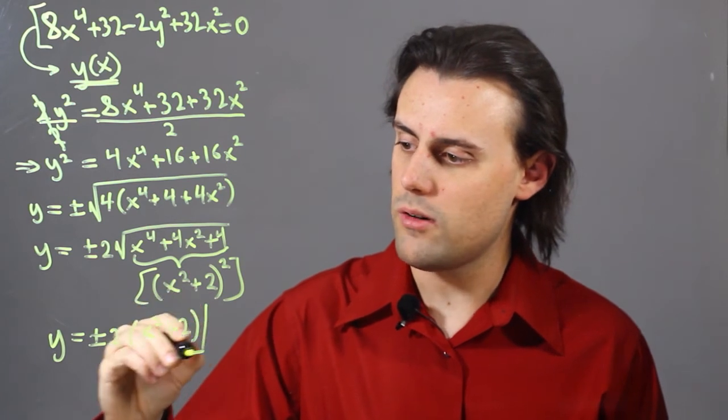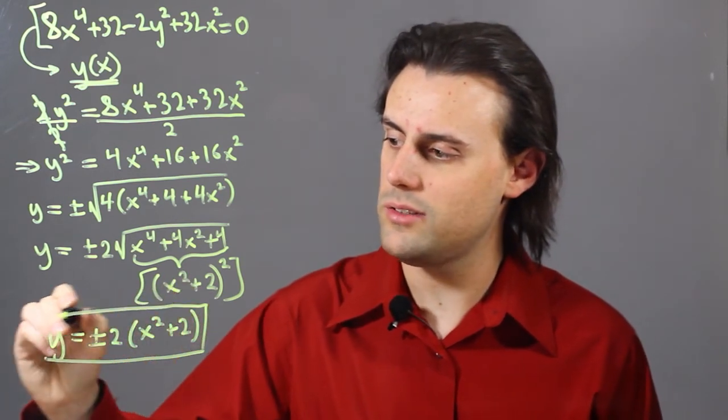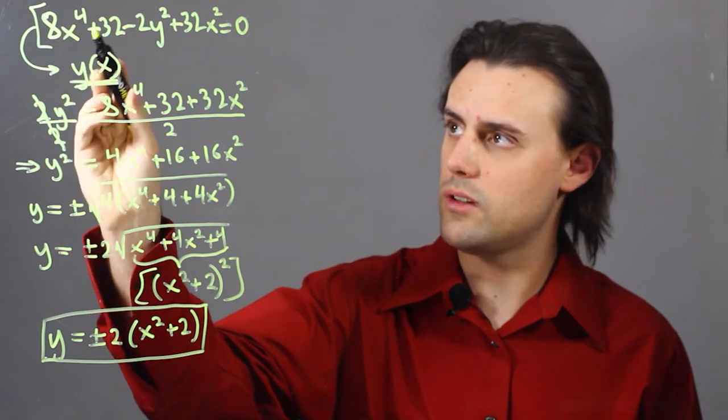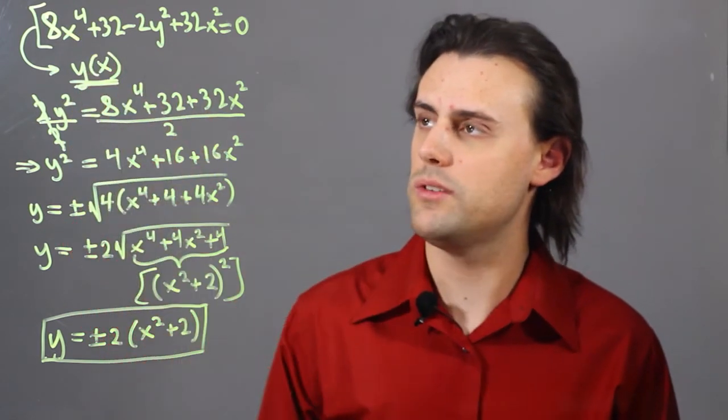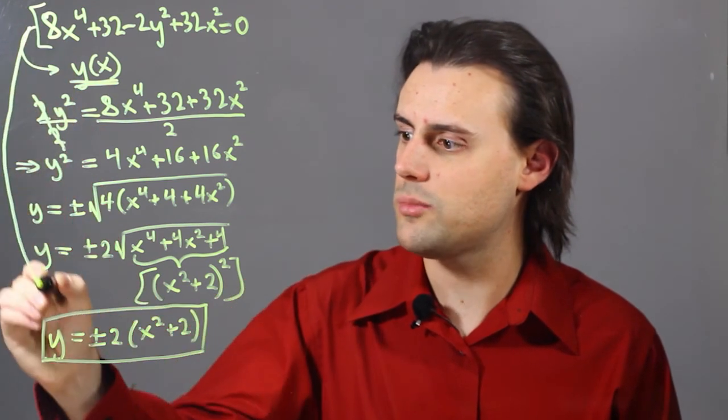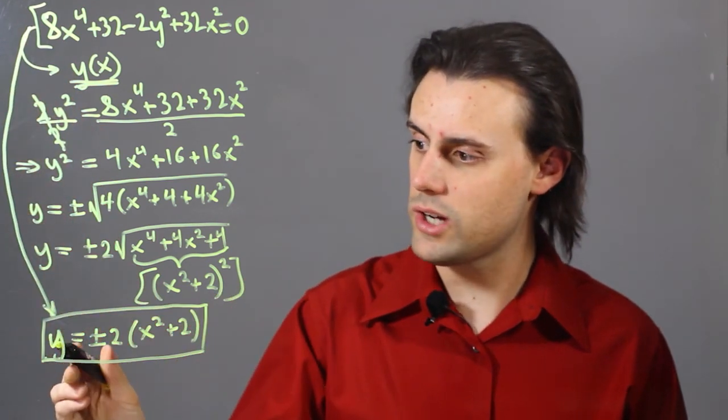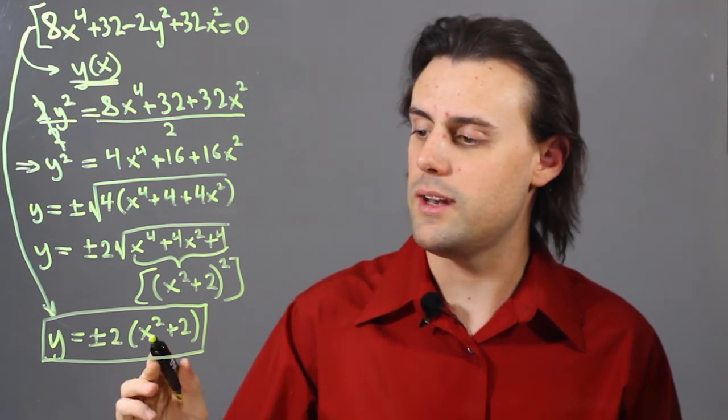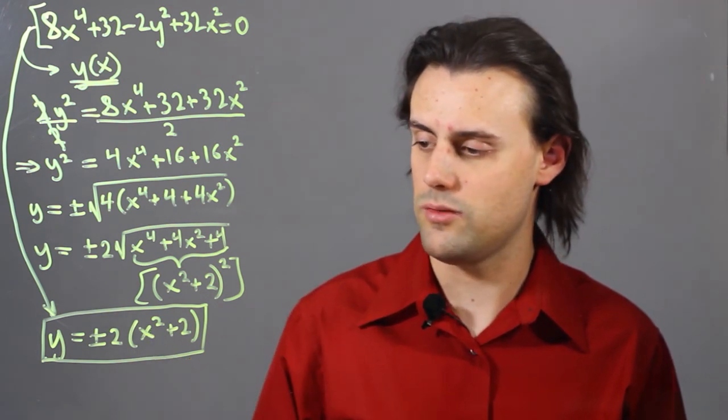So now, I have turned my implicit equation, which had terms involving x and y all on one side of the equation, and I have converted it into an explicit form, in which I have y as my dependent variable and x as my independent variable.